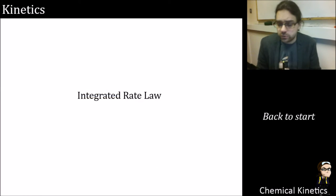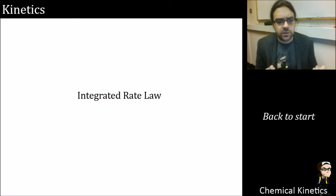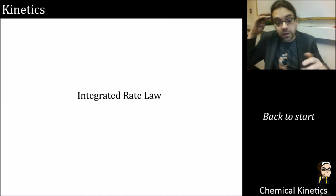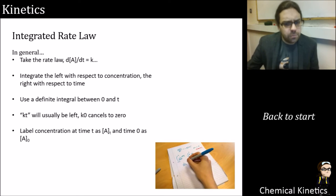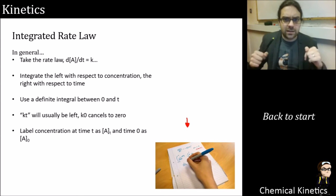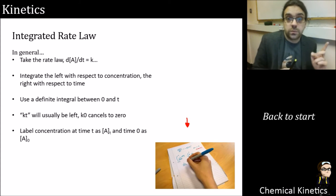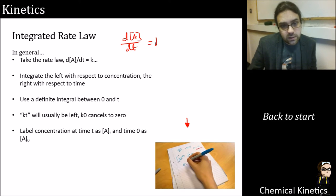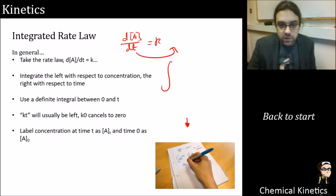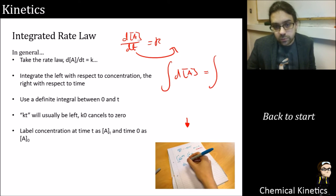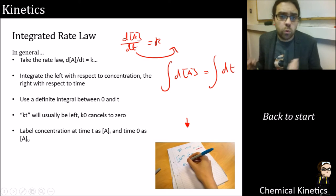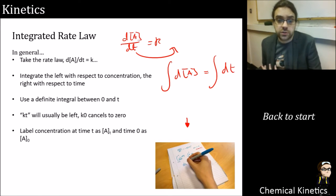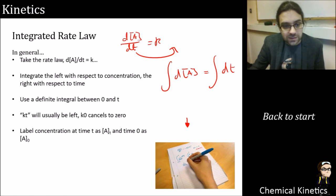Integrated rate laws — I've added more videos on Canvas about this. The general method: take your rate law — d[A]/dt = k times some concentration — and rearrange it. Bring dt to the other side so you're integrating one side with respect to concentration A and the other with respect to time t. That's how we figure out what to integrate.